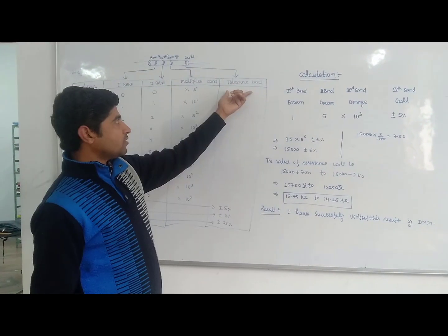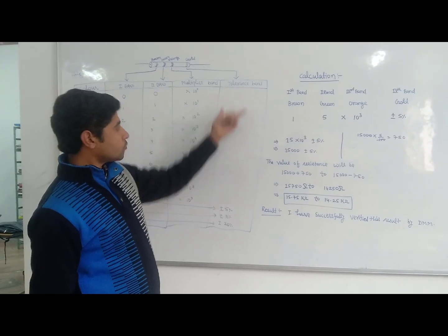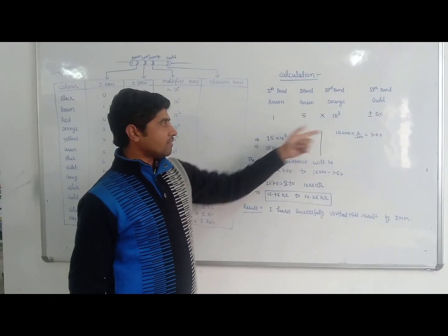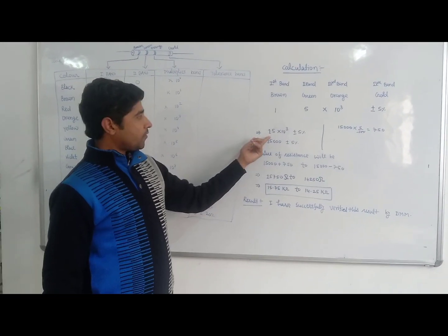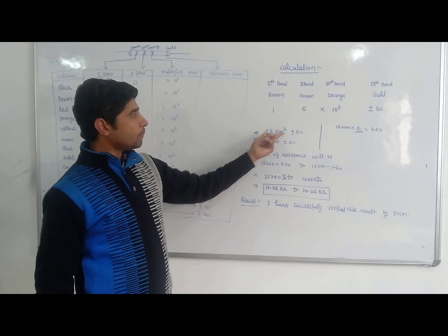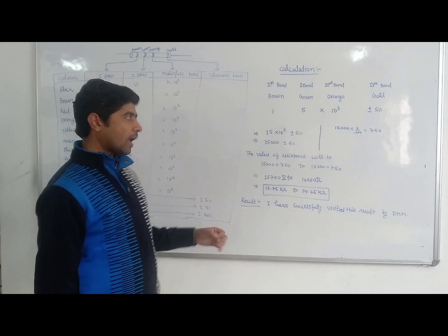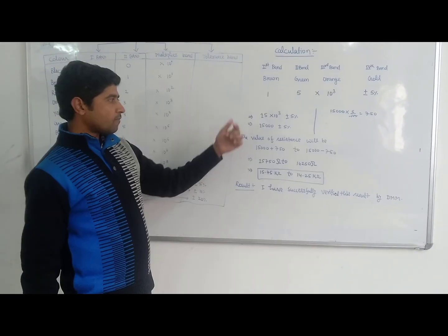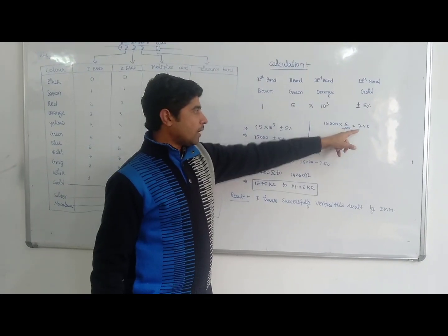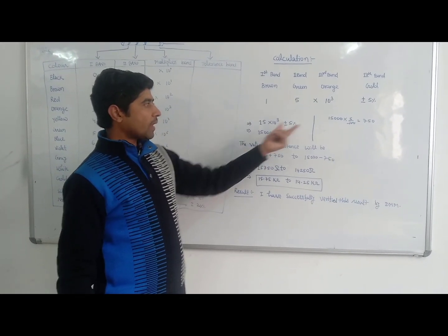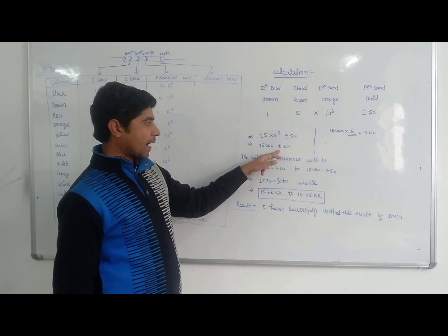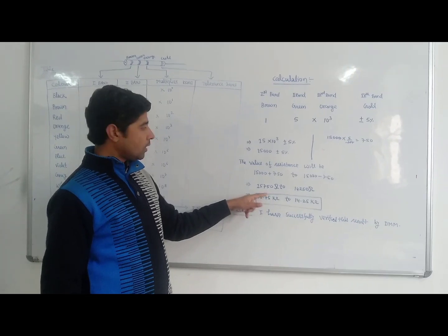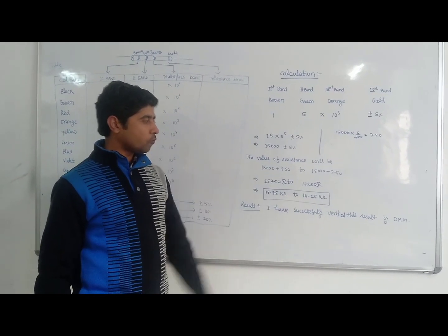Gold is considered as the tolerance band, and its value is plus or minus 5%. So the expression is: 15 multiplied by 10 to the power 3, plus or minus 5%. First, find 5% of 15,000 — that gives 750. Adding and subtracting, we get the range in kilohms: 15.75 kilohms to 14.25 kilohms.